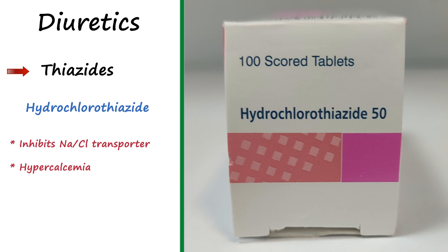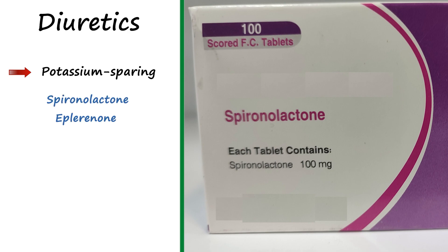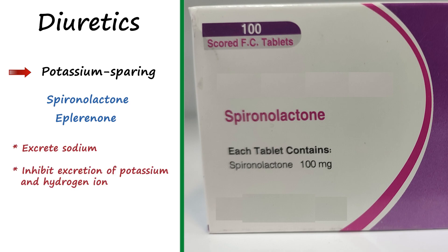The main effect of thiazides is in hypertension, because of their long duration and moderate intensity of action. They can also be used for long-term treatment of chronic edematous states such as heart failure. The last class of sodium-excreting diuretics is potassium-sparing diuretics. Spironolactone and eplerenone, which are steroid-derivative antagonists of aldosterone, are the prototypes in this class.